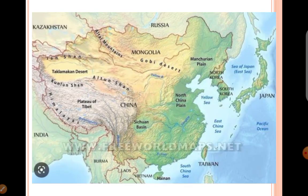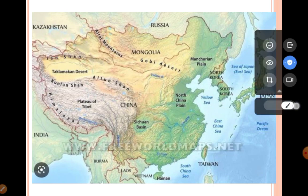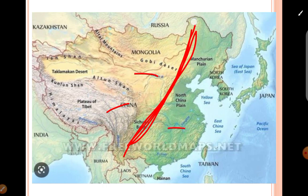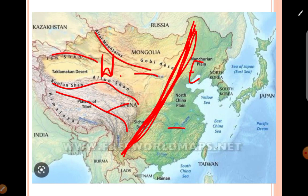Let me explain on the map what all the physiographic divisions are. If I draw a line here, you can clearly see the yellow and brown portion and the green portion. This is the western part. If we divide it into western and eastern, then the western part has mountain ranges — different mountain ranges, plateau regions, desert-type topography, mountains and plateaus, and some depression-like structures called basins. That is why this region is categorized as mountain ranges cum plateaus of the west.